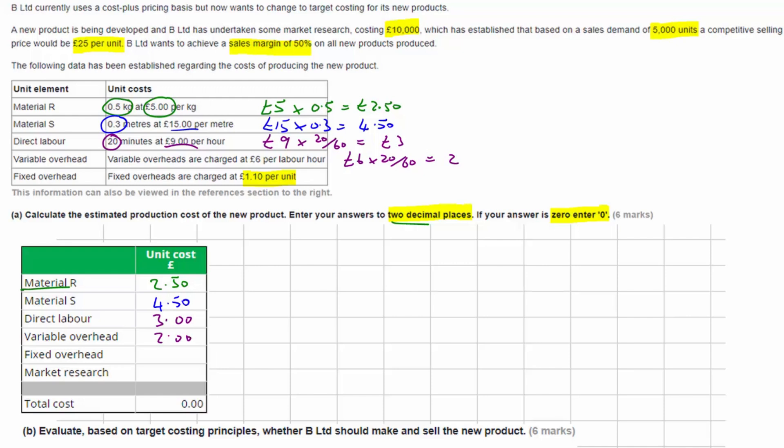For our fixed overhead, it simply tells us that's £1.10 per unit. Now what about our market research? Well, there is no market research per unit, is there? We've got our total cost of £10,000, but that's a fixed cost. It doesn't depend on each unit, and plus that's not a manufacturing cost either. So we want to put a zero in here as the instruction told us. So that gives us a total cost of £13.10 per unit.